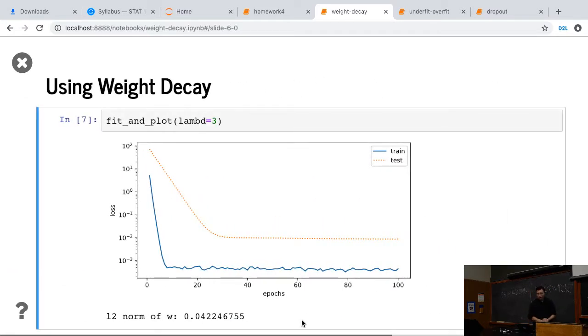Now let's try if I use weight decay. We use lambda equal to 3. You can see that we still have a little bit of overfitting here, but it's much better. We actually drop the test error down by a lot.